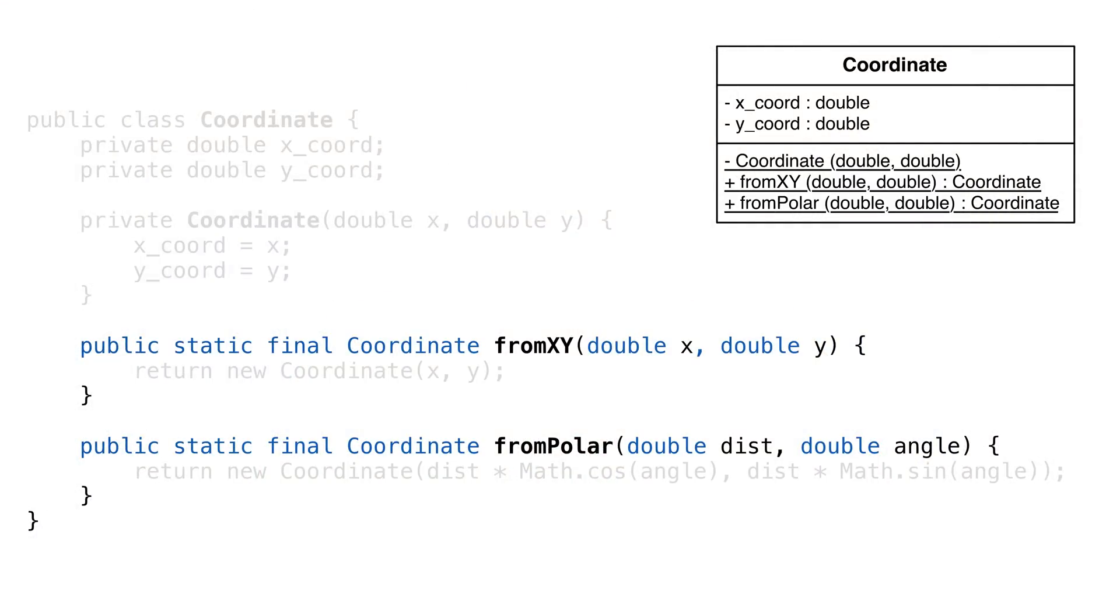How did this help us? Well, for starters, we now have more meaningful names to create our classes. From x, y, and from polar make it clear what values are going into the creation of our instance. That's easier to read than a constructor name.